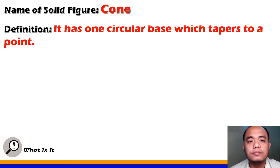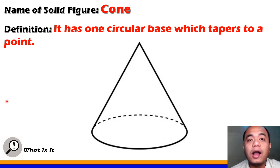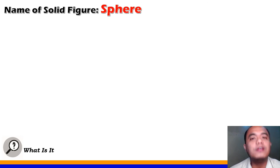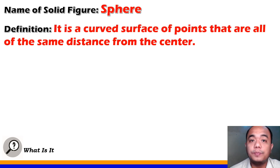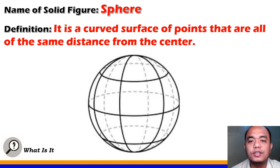Cone is a three-dimensional figure with a single curved base that tapers to a single point called the apex. The next solid figure is the sphere — sphere is a curved surface of points that are all of the same distance from the center. This is how a sphere looks — it has a curved surface, and all the points are the same distance from the center of the sphere.